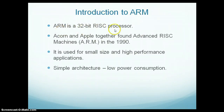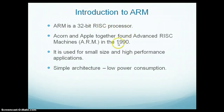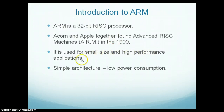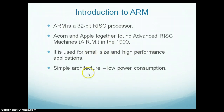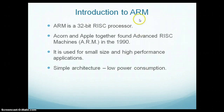ARM is a 32-bit RISC processor. As you all know, RISC means Reduced Instruction Set Computer. This ARM was founded in 1990 by Acorn and Apple together. It is used for small size and high performance applications. It has a very simple architecture and it consumes low power. This ARM is used in embedded applications.